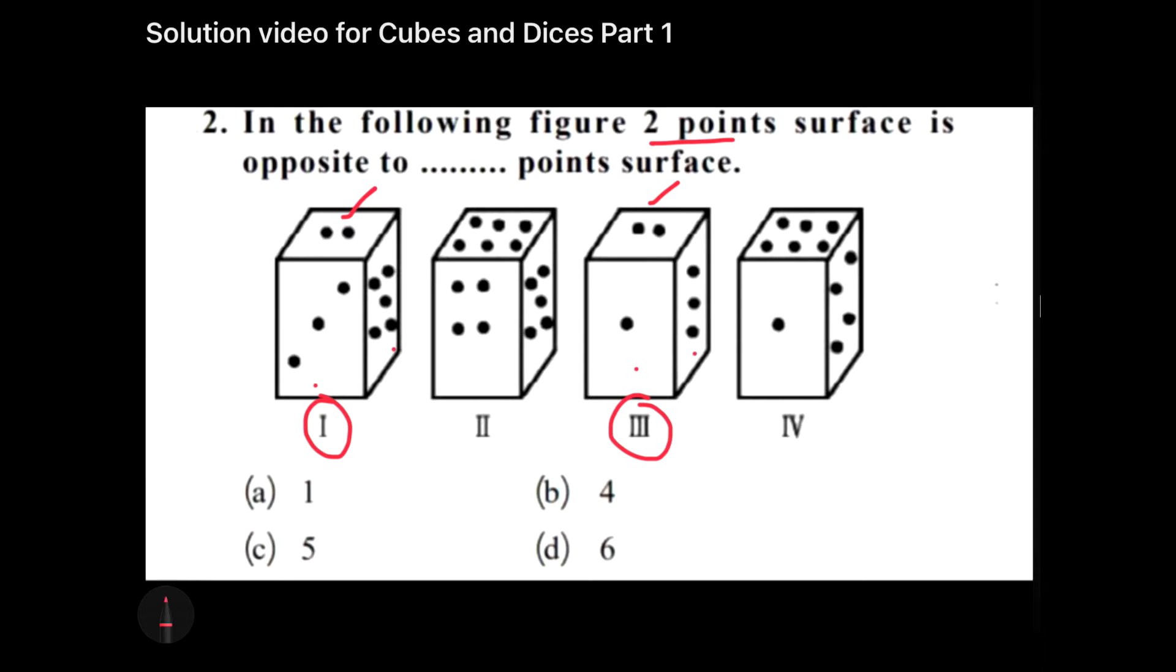When they are adjacent to two that simply means they cannot be opposite to two, and at the same time two itself cannot be the opposite. So we can say that two cannot be the answer, one cannot be the answer, three cannot be the answer, and five cannot be the answer. The leftover numbers are four and six. With this you can easily eliminate two options directly.